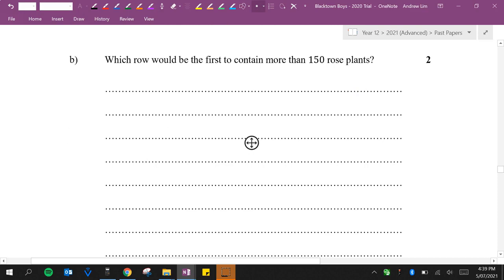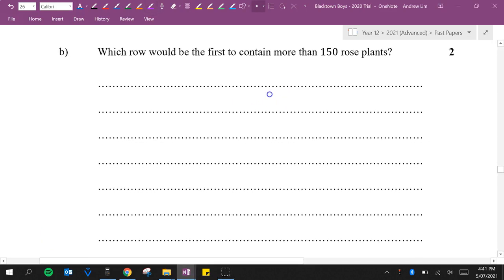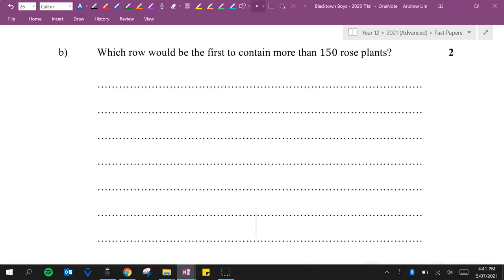Which row would be the first to contain more than 150 rose plants? So this time we're going to use the same formula but we need to work out what N is equal to. So we've got the Nth term where we're going to say is equal to 150, and then we can work out which one has more than 150.